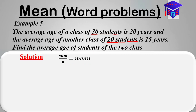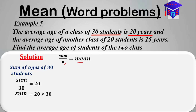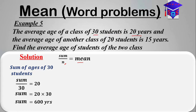Let's first find the sum of the ages of the 30 students. For the class of 30 students whose average age is 20 years, n is 30 and the mean is 20. Substituting into the formula, sum over 30 equals 20. Multiplying both sides by 30 gives the sum equal to 20 times 30, which equals 600 years.